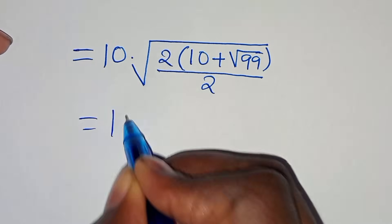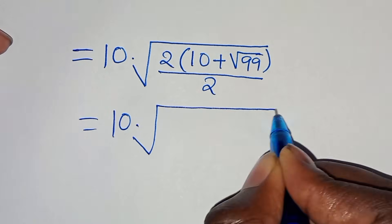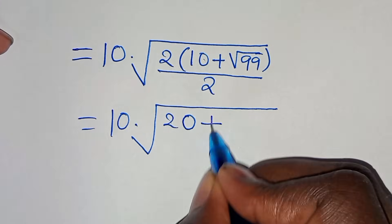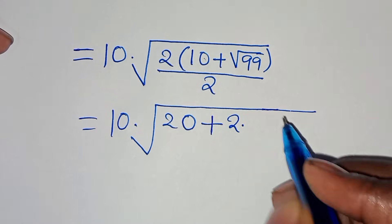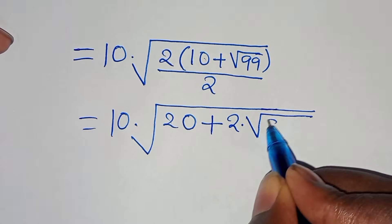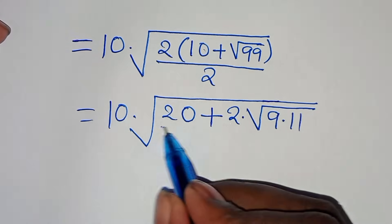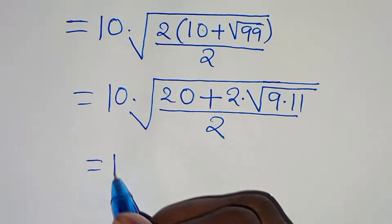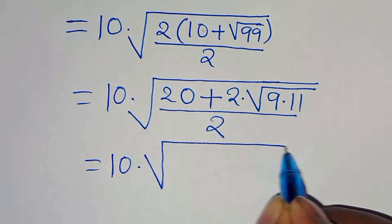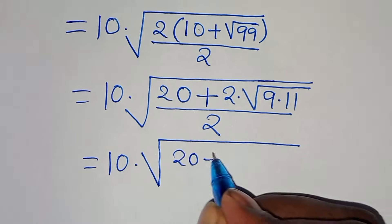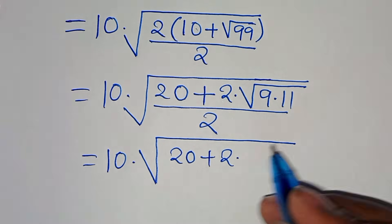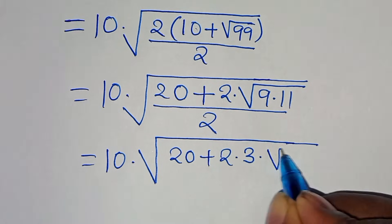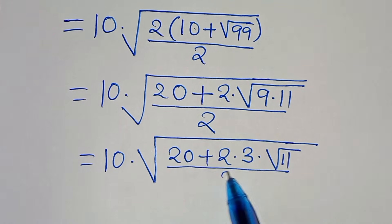We can rewrite this as 10 multiplied by square root of 20 plus 2 times square root of 10. We express 99 as 9 times 11, so square root of 99 equals square root of 9 times square root of 11, which is 3 times square root of 11, all divided by 2.